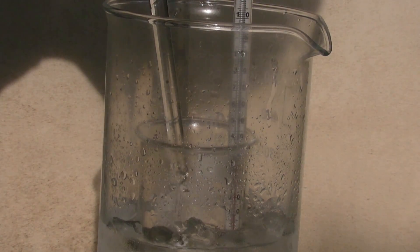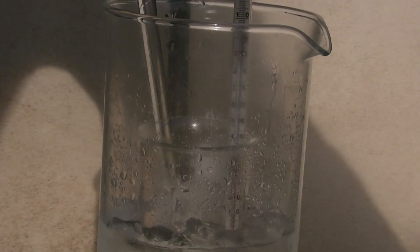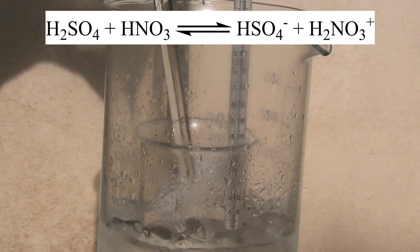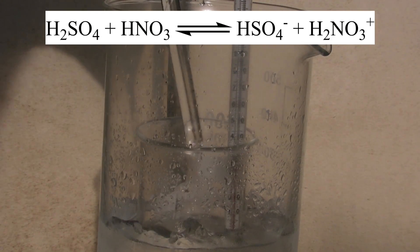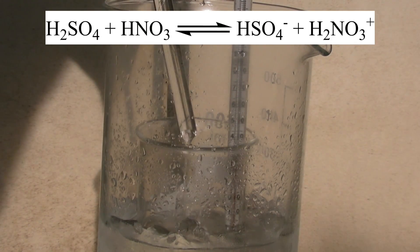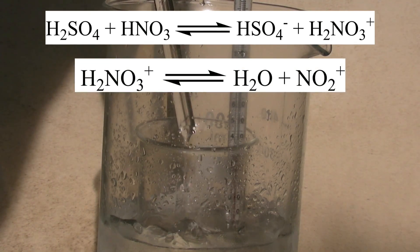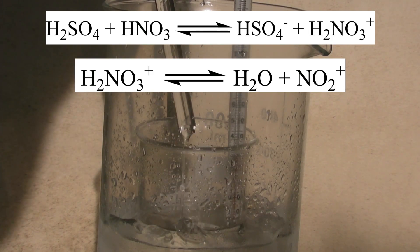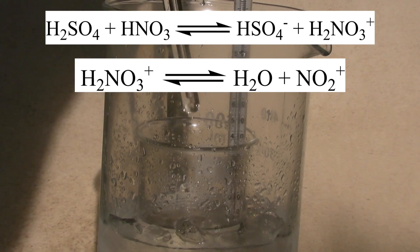In the mixture, the following reaction takes place. At first, the nitric acid is protonated by the sulfuric acid. Then, water is split off and the nitronium ion is formed, which is able to react with lots of compounds.